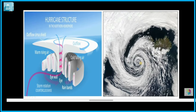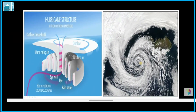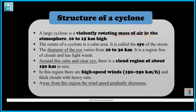The eye has low pressure and is a very calm area. The diameter of the eye varies from almost 10 to 30 km — it is a region free of clouds with light winds. Surrounding the eye is a cloud region of about 150 km in size, with high speed winds of almost 150 to 250 km per hour and heavy rain. As you move further from this region, wind speed gradually decreases.